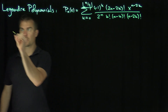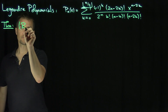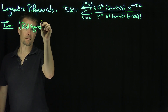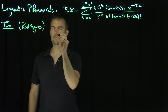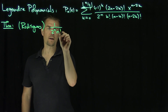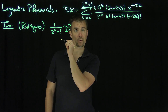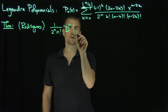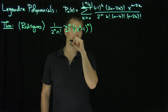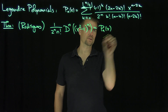Now we have a theorem due to Rodriguez, which states the following: if we look at 1 over 2 to the power n, n factorial, and then take n derivatives — applying the derivative operator n times — of the polynomial x squared minus 1 to the power n, which is a polynomial of degree 2n, we exactly get the Legendre polynomials Pn of x.